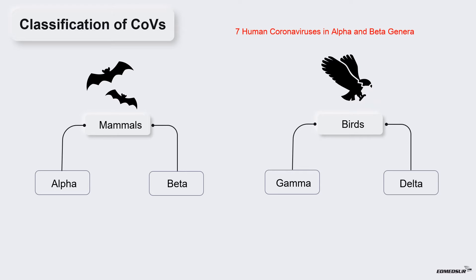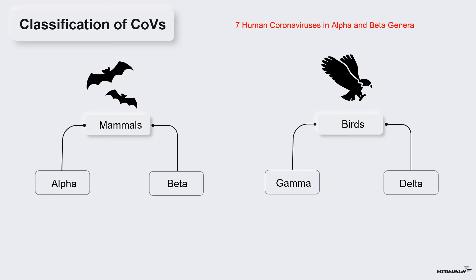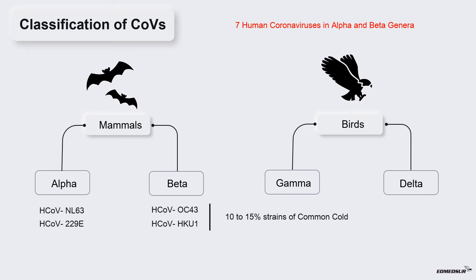There are seven human coronaviruses present in the Alpha and Beta coronavirus genera. Out of these, there are four circulating strains of human coronaviruses, including human coronavirus NL63, human coronavirus 229E, human coronavirus OC43, and human coronavirus HKU1. They are responsible for about 10–15% of common cold cases.